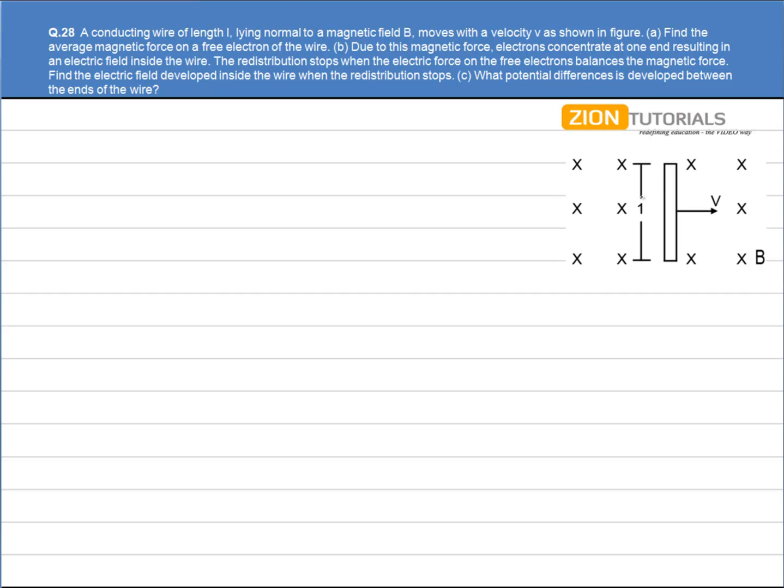First of all, let's say this is my rod. Clearly there are protons and electrons inside this rod. The rod is moving with a velocity V. There will be force on the electron as well as proton and the force will be equal to QV cross B.